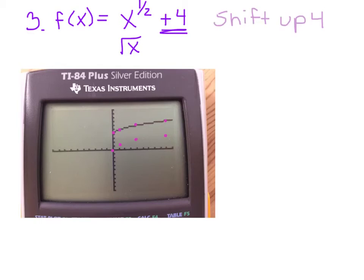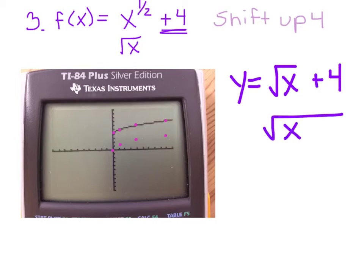One important calculator tip: when you type this in using the square root symbol, make sure you get out of the radical before you type the plus 4 — hit the right arrow to exit the radical first. Because placing the +4 inside versus outside the radical gives you a different graph. Pay attention to whether the constant is inside or outside the radical when entering it.